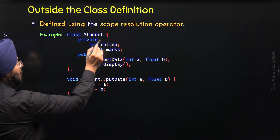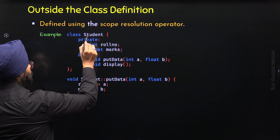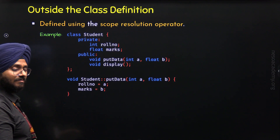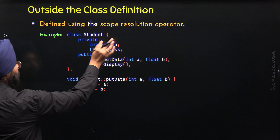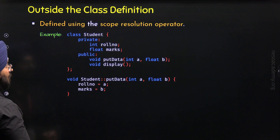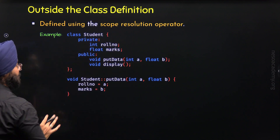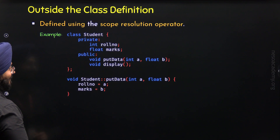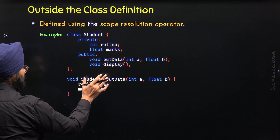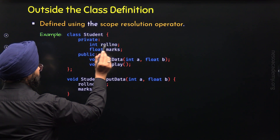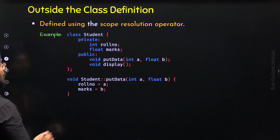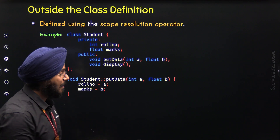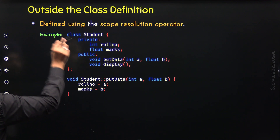Now you might be thinking that these are private members, therefore they must be accessible within the class only. How can we access these members within this function, which is defined outside the class? We can access private members within member functions that we define. Even though a member function is defined outside the class, we can think of it as being part of the class — therefore the member function can access private members directly.